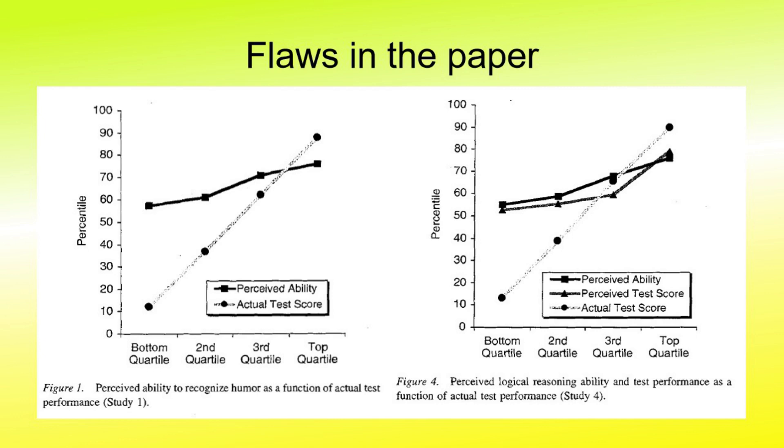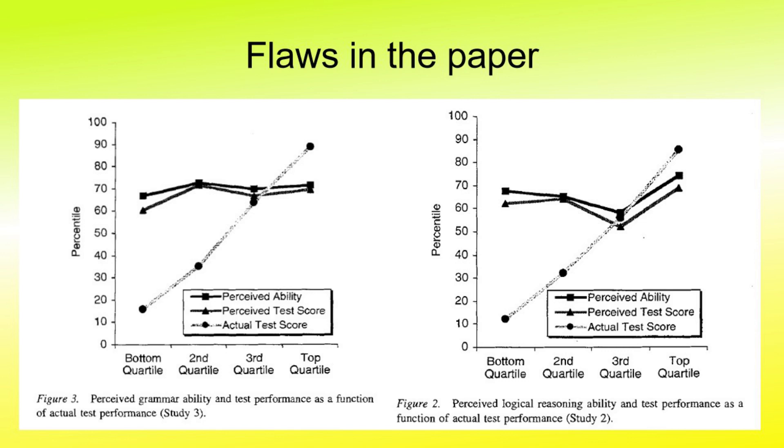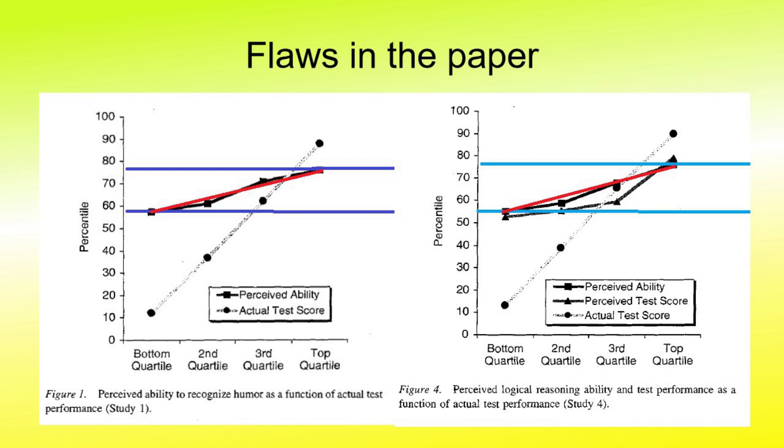When you start comparing the graphs of these various studies, they really do not show the kind of consistency that would be expected if the Dunning-Kruger effect were real. While these two show an upward trend, these two fluctuate more, but actually show a generally flat trend.